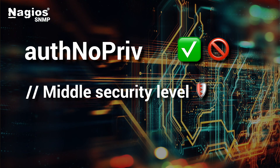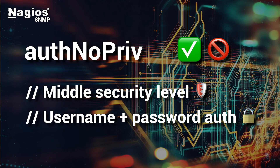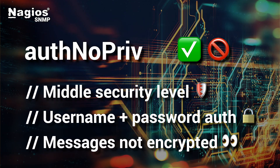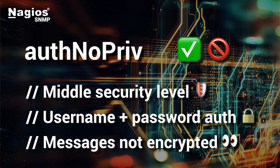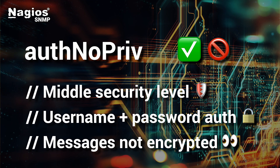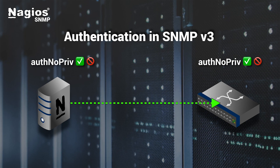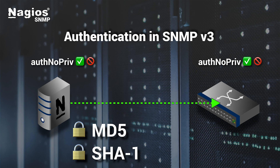AuthNoPriv is the middle security level in SNMP v3. AuthNoPriv uses both a username and an authentication password. Your message is authenticated but not encrypted. Anyone who can see the network traffic can read your SNMP request and your username, and they can read what the device sends back to you. Even though the message is not encrypted, the authentication password is not sent over the network. Instead, SNMP v3 uses the authentication password to create a cryptographic hash value for the message, which allows both sides of the communication to verify that they have the same password. An attacker would have to know the authentication password in order to successfully send malicious SNMP requests.